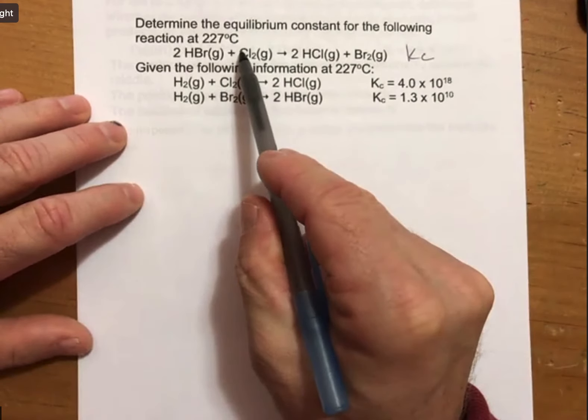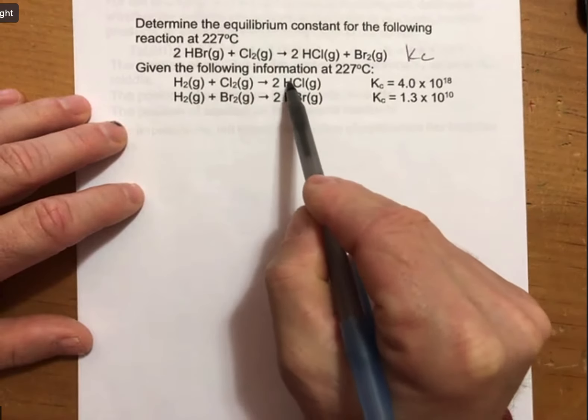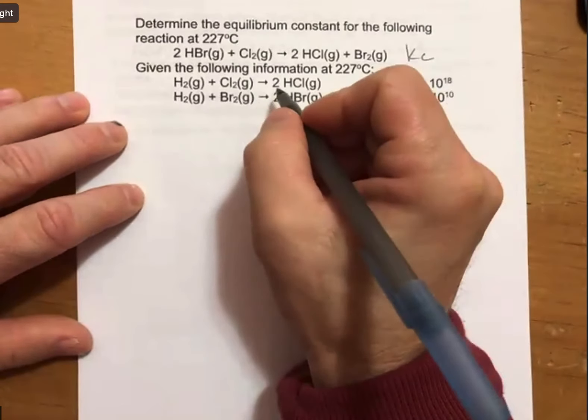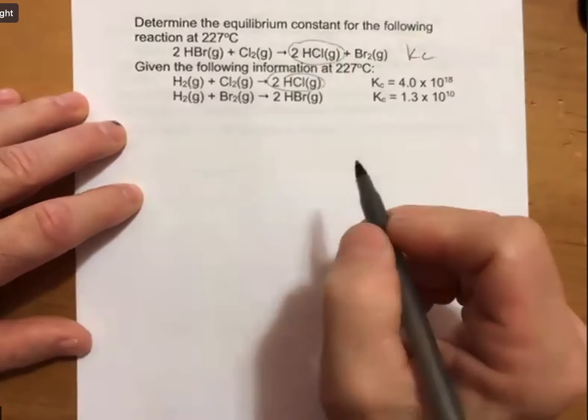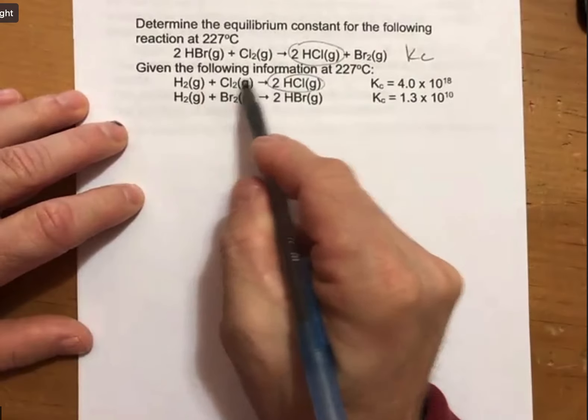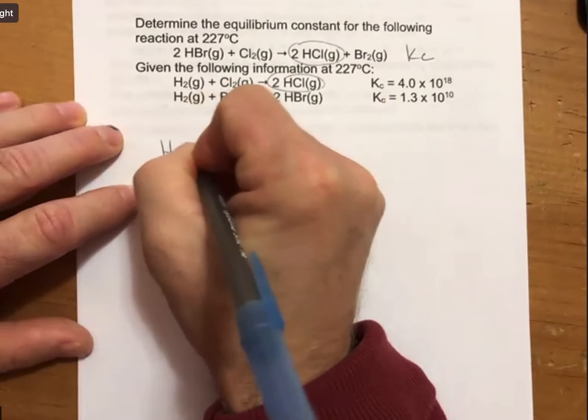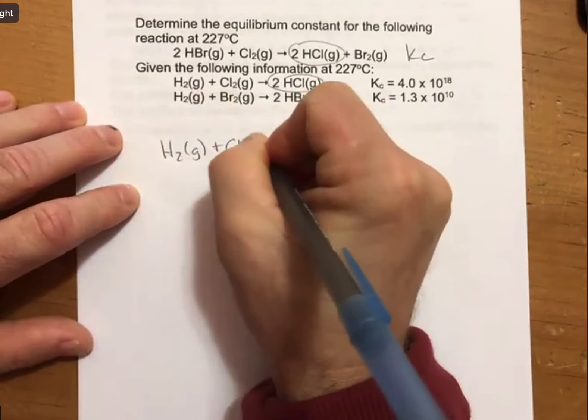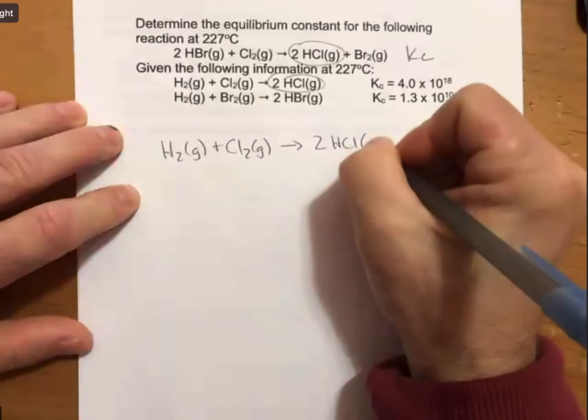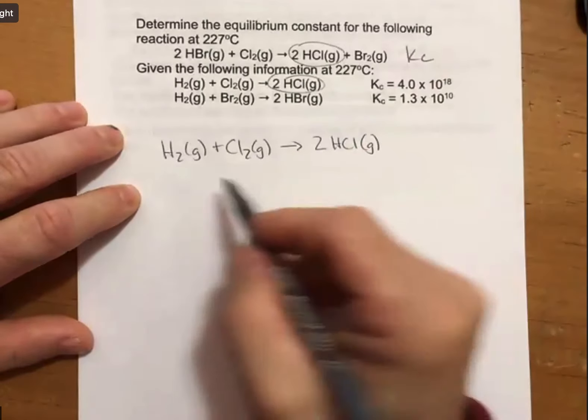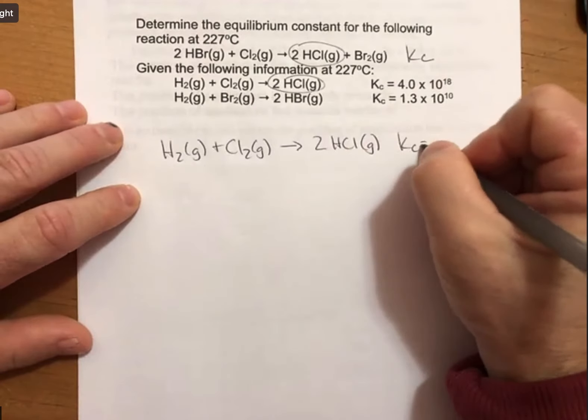Let's show you how that works here. We're going to be creating this reaction out of these two reactions. I can see that I've got 2HCl on the product side, so that means I'm going to have to write this reaction just like it is. Any reaction I write just like it is, I keep its Kc value exactly the same.